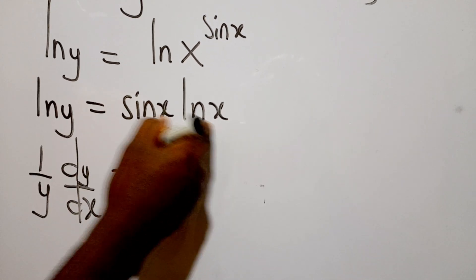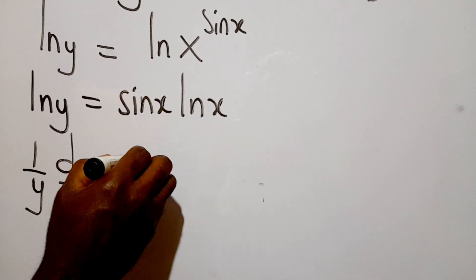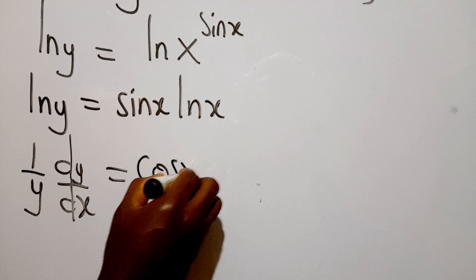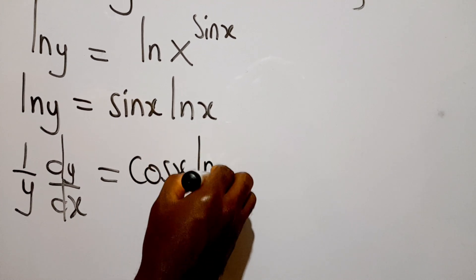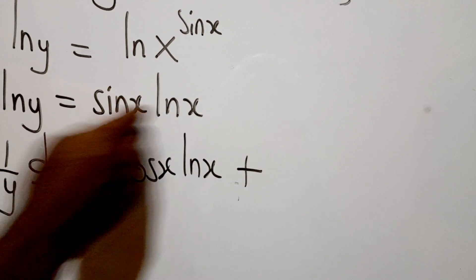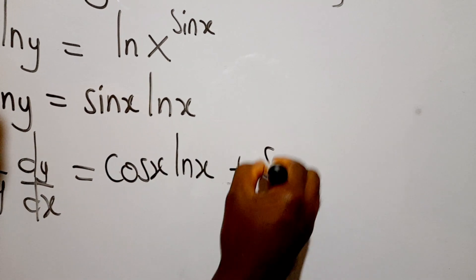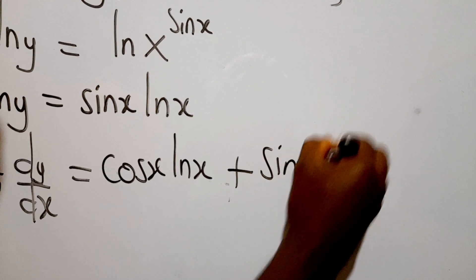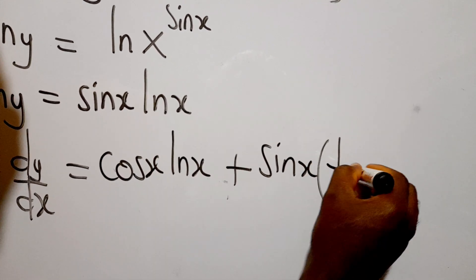Now I'm keeping ln x and differentiate sin x. If I differentiate sin x, I'll get cos x ln x, then plus. Now I'll keep sin x and differentiate ln x. When I differentiate ln x, I'll get 1/x.